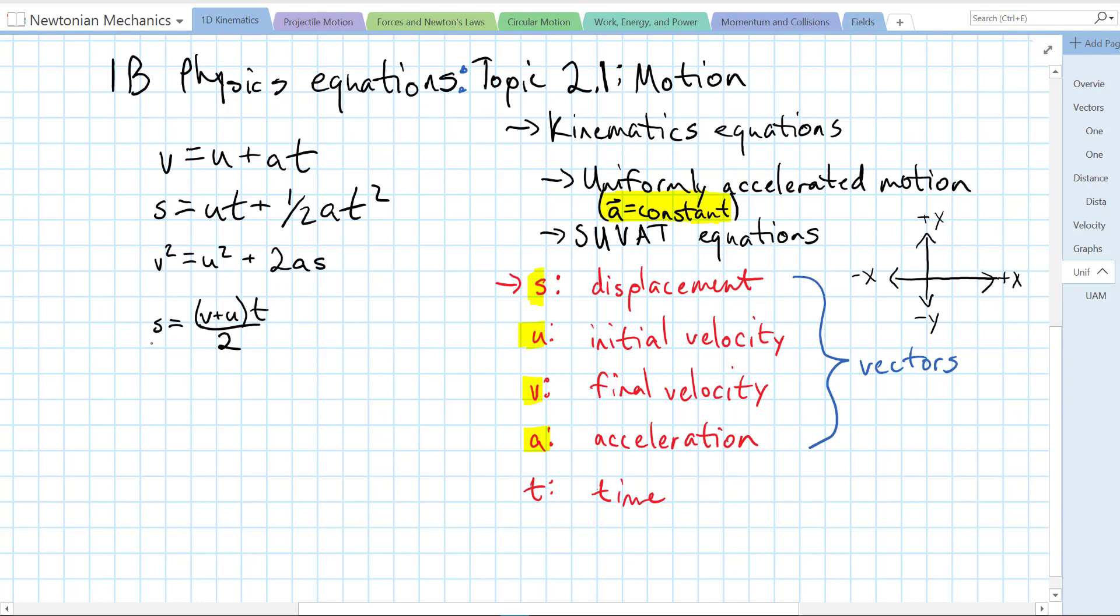And displacement equals V plus U times T over 2. Now each of these is missing one of our kinematics variables, one of our motion variables. So we're going to have to choose the equation that has only one unknown when we're solving a particular problem. Make sure you have those equations written down and these variables written down so you can solve problems in the future.